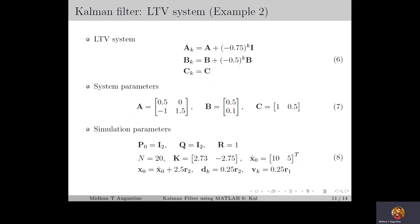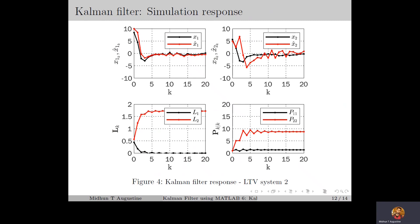Next we consider the second example of the linear time varying system from lecture 4, for which the system matrix, input matrix, and output matrix are chosen as in equation 6, and the system parameters are chosen as in equation 7. Here, even though the matrices AK and BK are time varying, they converge to A and B respectively as K increases, because the terms -0.75^K and -0.5^K converge to 0 as K increases. The simulation parameters are chosen as in equation 8, same as the previous example. Figure 4 shows that the matrices LK and PK|K converge to some fixed matrices as K increases, because AK and BK converge to A and B.